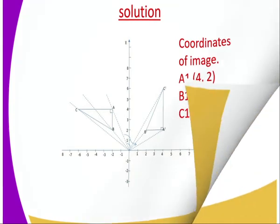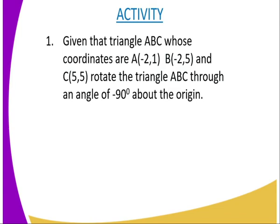We have come to the end of today's lesson. Here is the assignment: given that triangle ABC has coordinates A(−2, 1), B(−2, 5), and C(5, 5), rotate triangle ABC through an angle of negative 90 degrees about the origin — meaning the center of rotation is at (0, 0). Please do that work as an assignment.